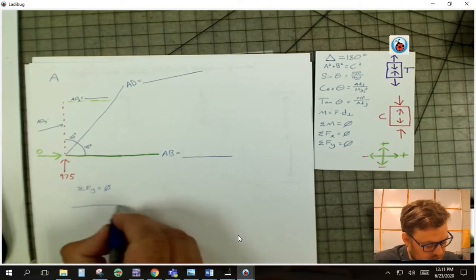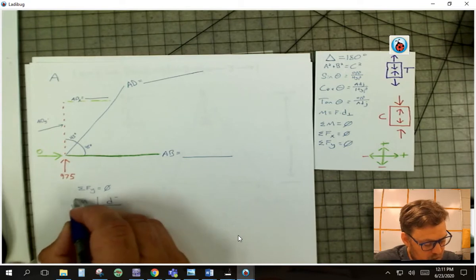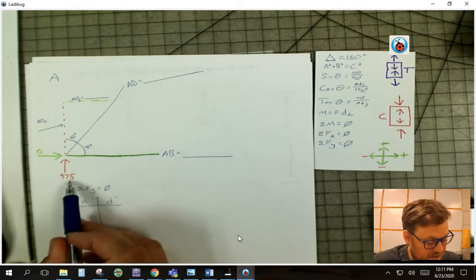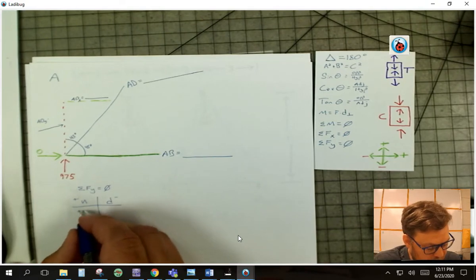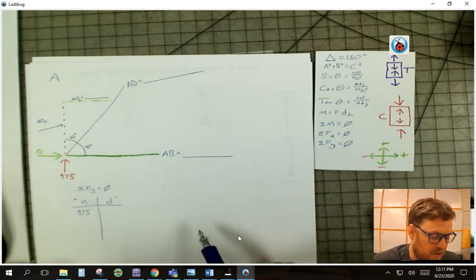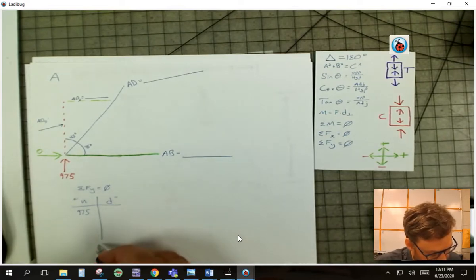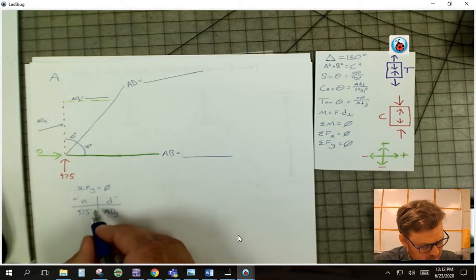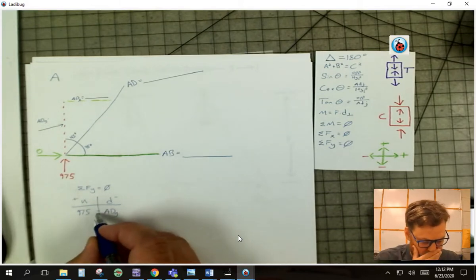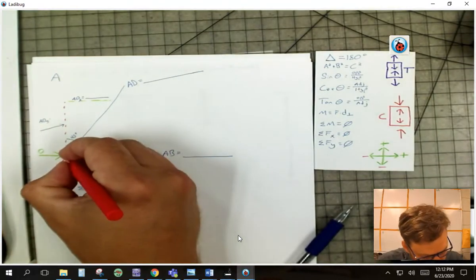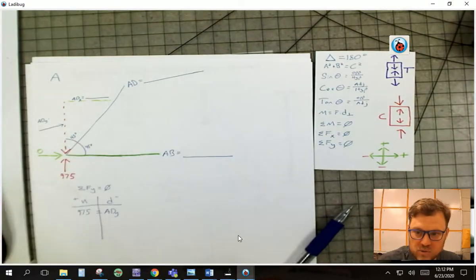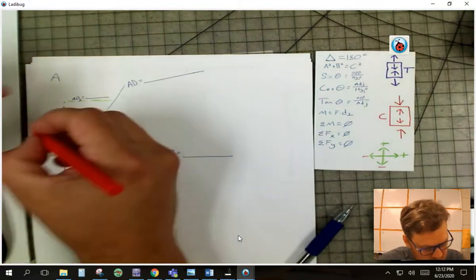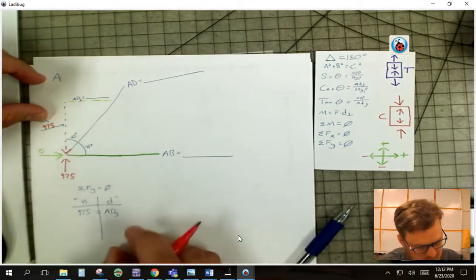So if I take that T chart and I go what goes up has got to come down, and I can look at that and I go, well if I've got 975 going up, well I only have one other force in the Y and it is ADY. So the way I kind of think about it is I know it's got to go down because I've only got two things. So AD in the Y then has to really be equal to 975. So it's going to be going down. I'm going to go ahead and mark that as down and I'm going to write 975 here.